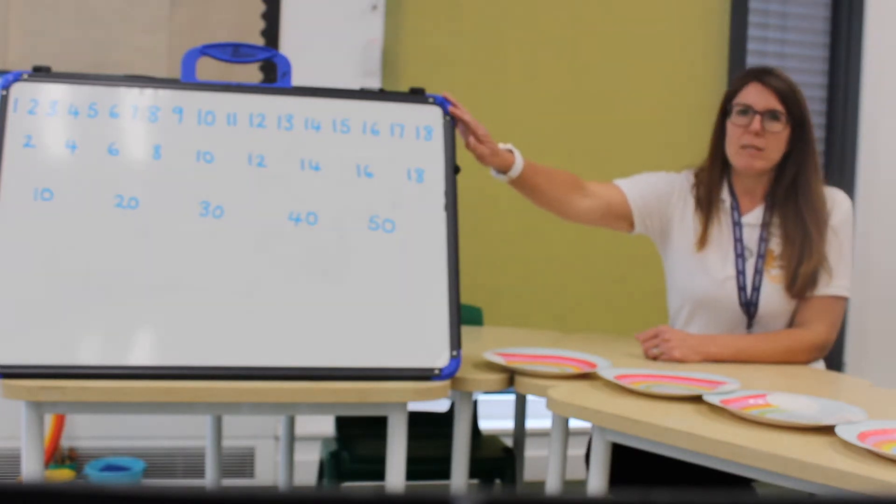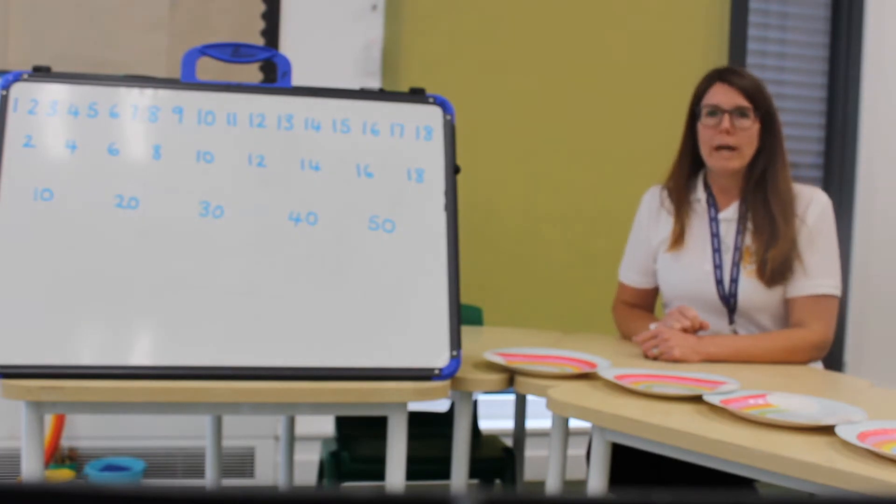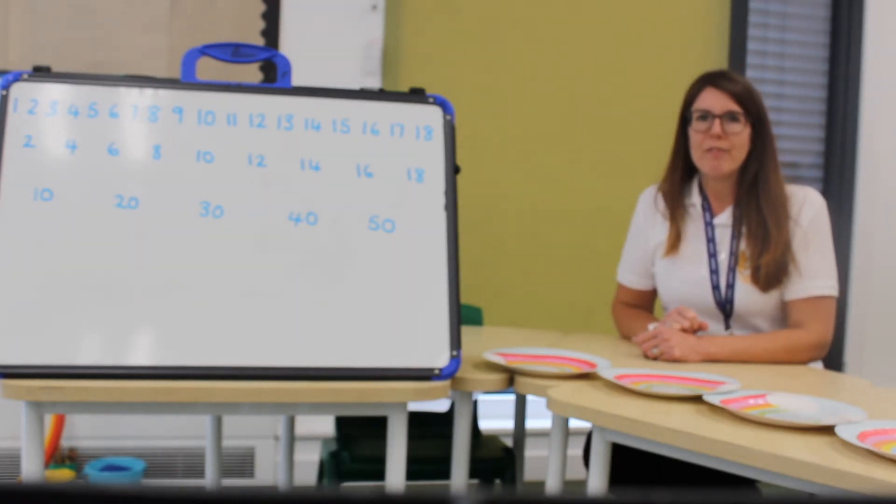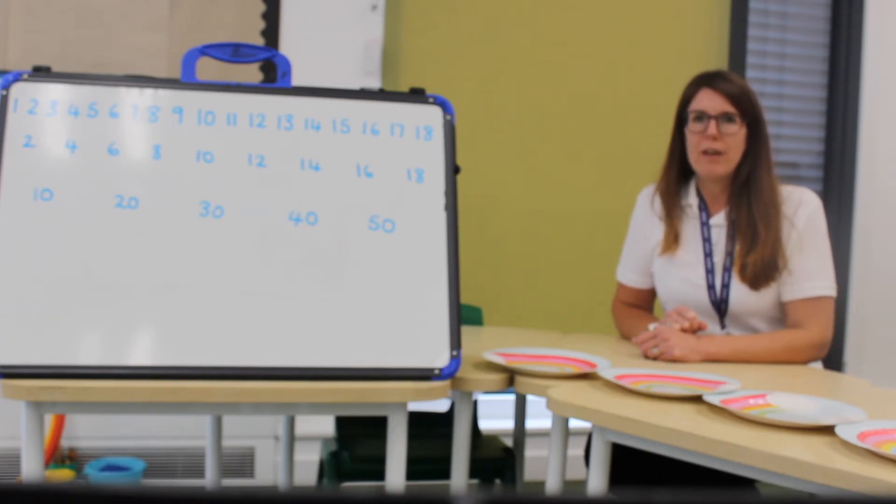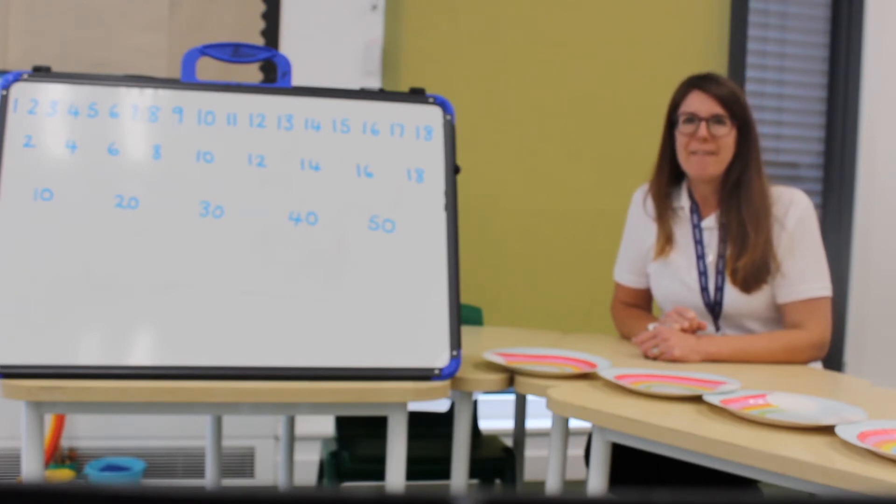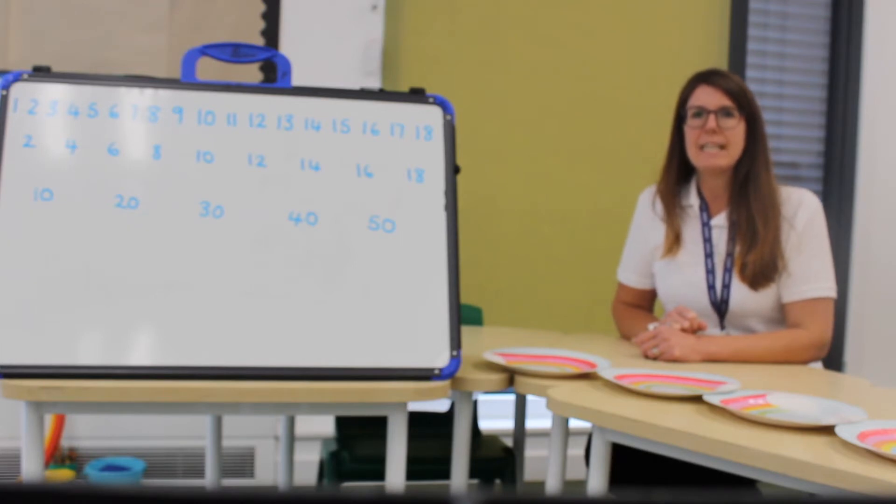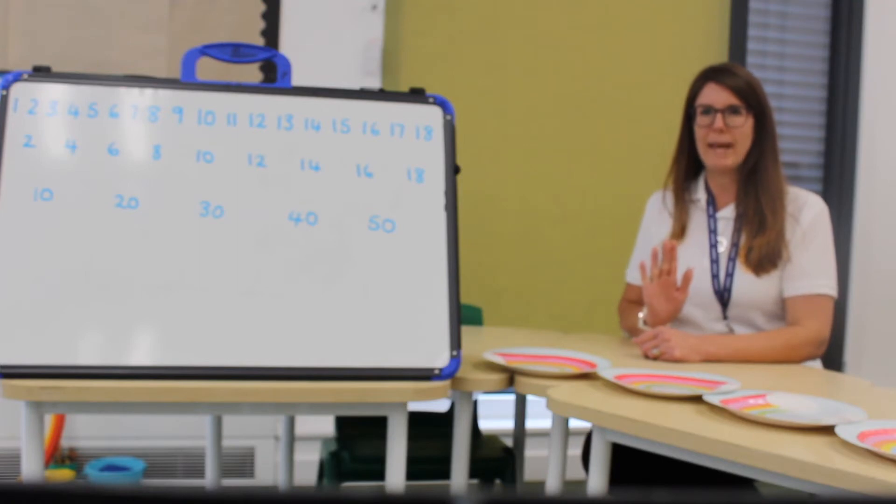starting with counting in ones. 1, 2, 3, 4, 5, 6, 7, 8, 9, 10, 11, 12, 13, 14, 15, 16, 17, 18. Brilliant, we'll stop there.